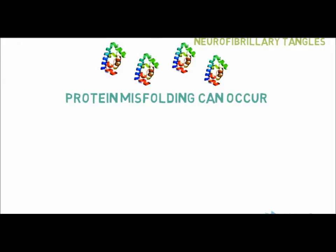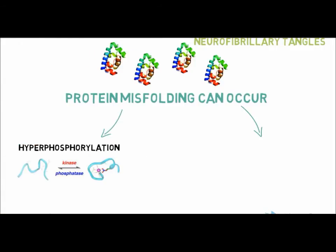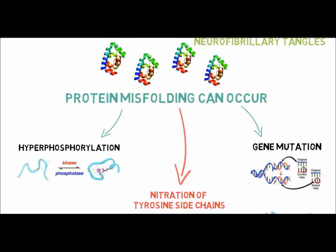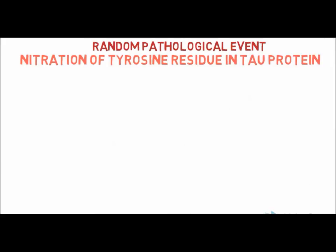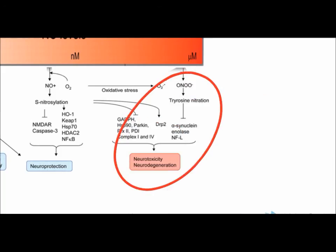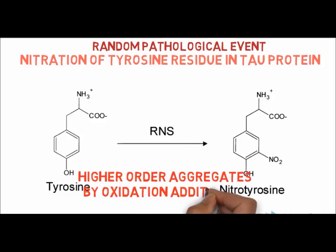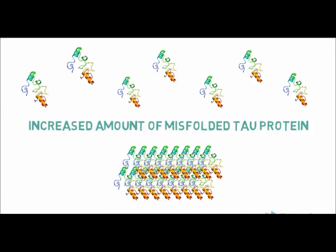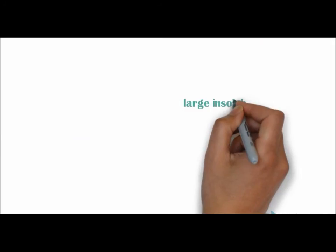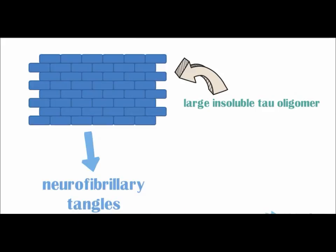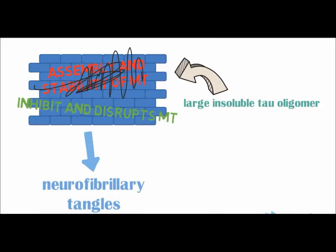Nitration in tyrosine sidechains in tau protein is a random pathological event in which reactive nitrogen and oxygen species, thought to be generated from peroxynitrite, induce nitrative and oxidative protein modifications. Reaction of peroxynitrite with tau protein can lead to the formation of 3-nitrotyrosine, or higher-order aggregates by oxidative addition of two tyrosine residues to form 3,3-dityrosine cross-linked proteins. These proteins come together to form small soluble oligomers and subsequently large insoluble tau oligomers that form neurofibrillary tangles in the neuron. This diagram shows how a normal neuron and a neuron with neurofibrillary tangles look.